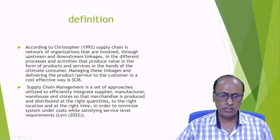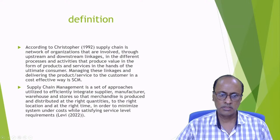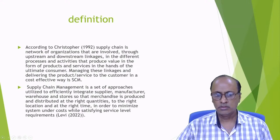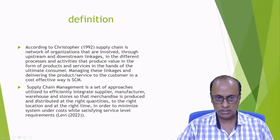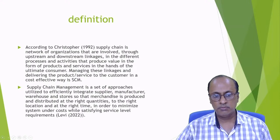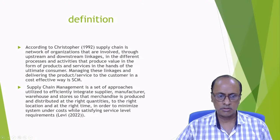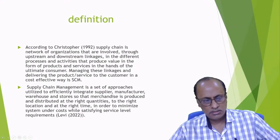There are many supply chain specialists who have given definitions. One such definition is given by Christopher in 1992. He says supply chain is a network of organizations that are involved through upstream and downstream linkages in different processes and activities that produce value in the form of products and services in the hands of ultimate customers. Managing these links and delivering the product and service to the customer in a cost-effective way is supply chain management.